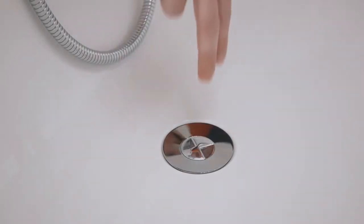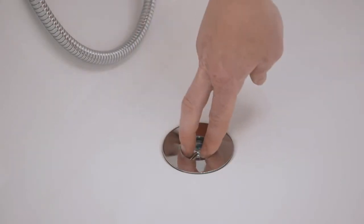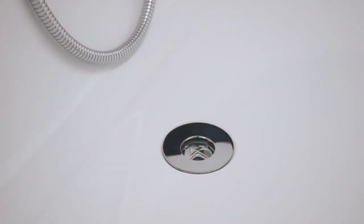To completely empty the bath, push the valve cover down and turn. The valve opens and the water can drain off.